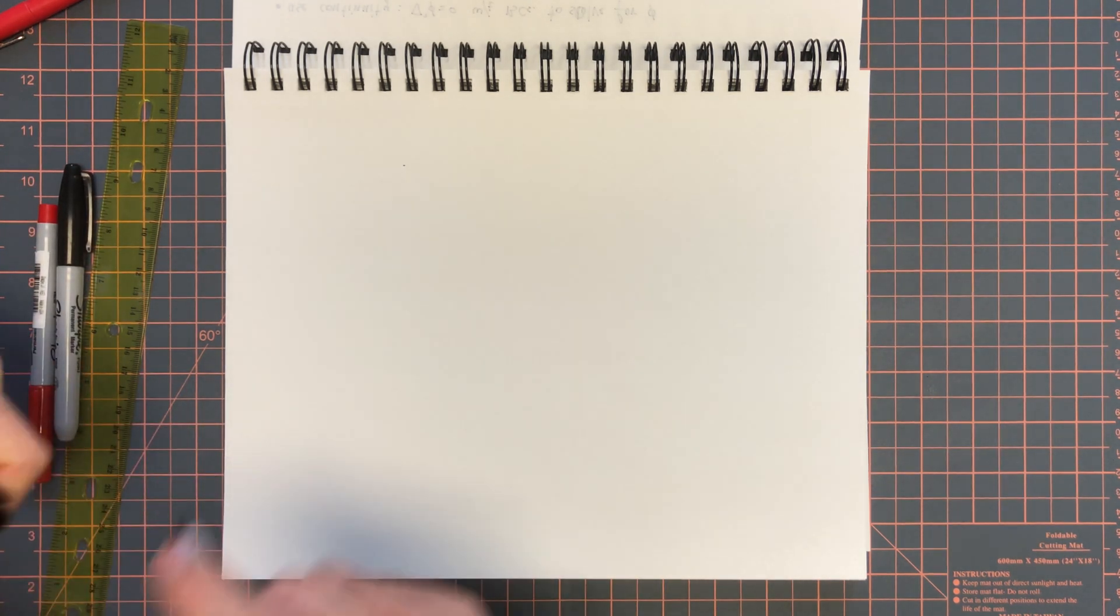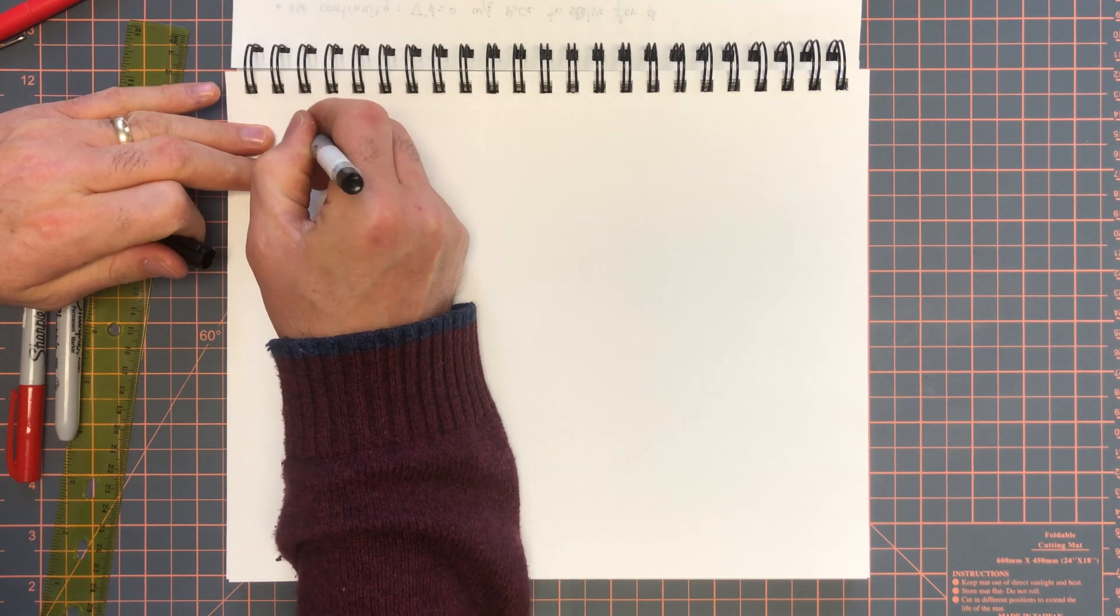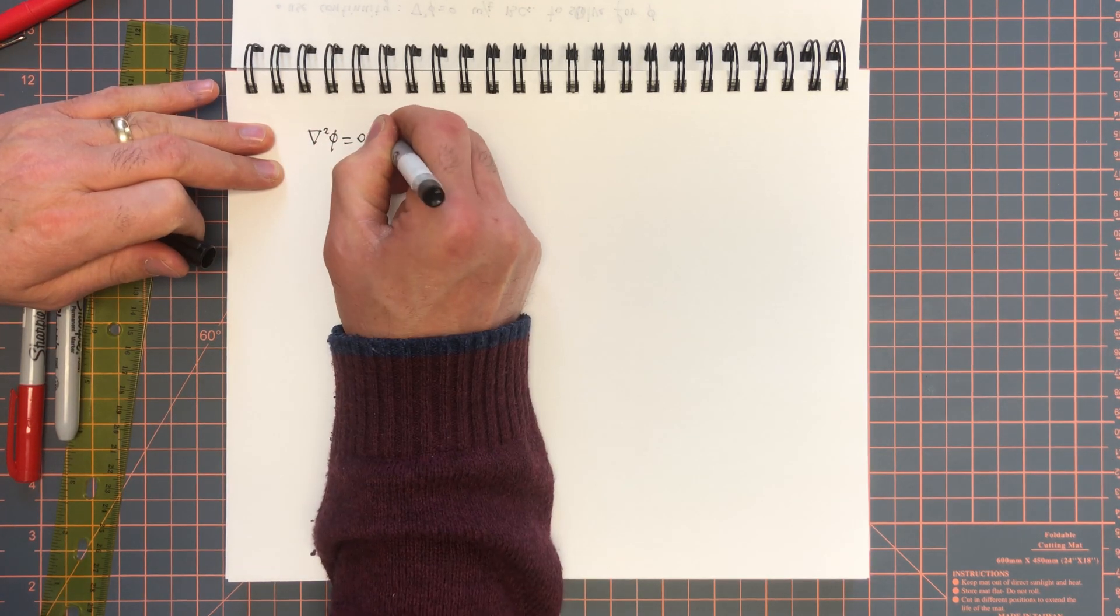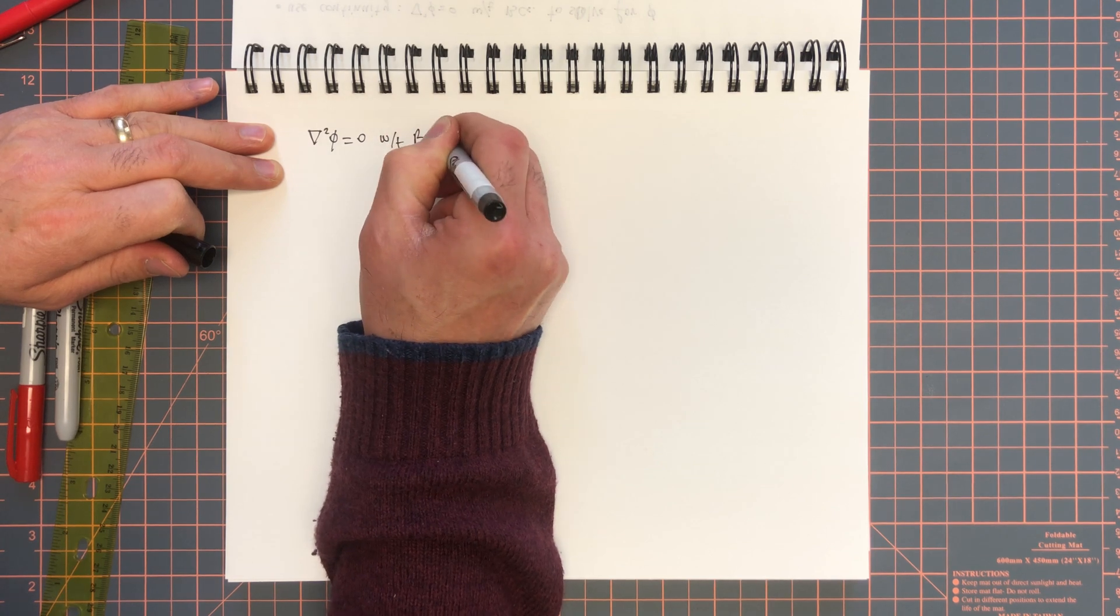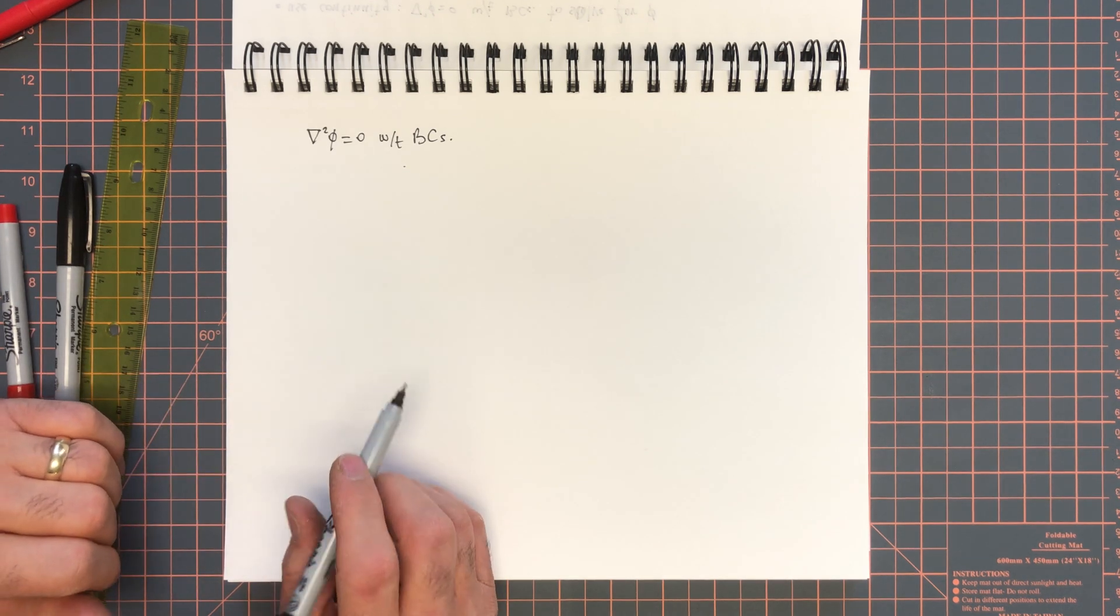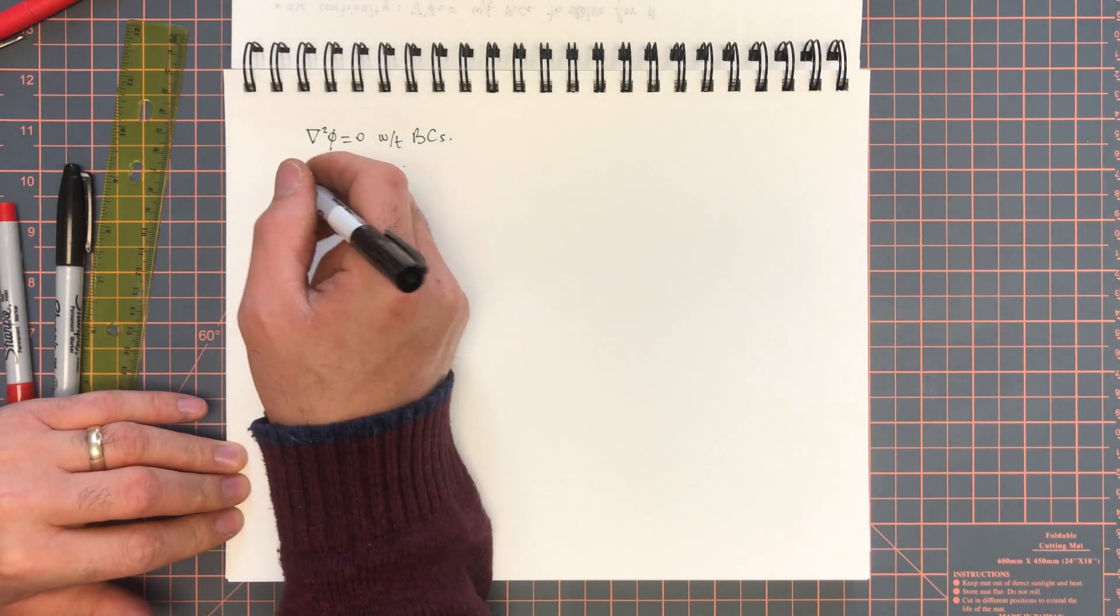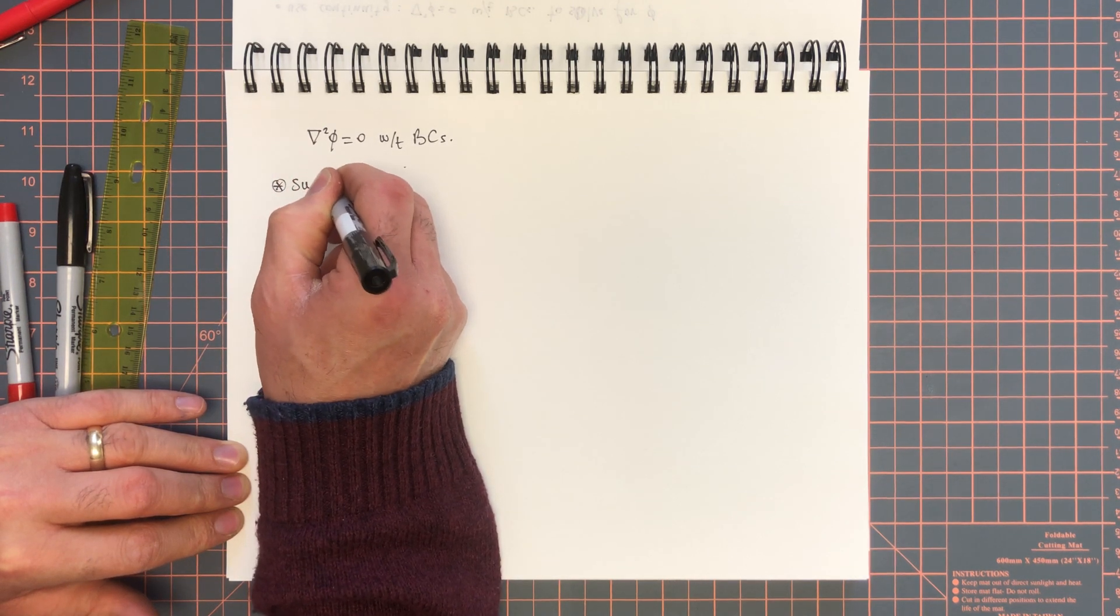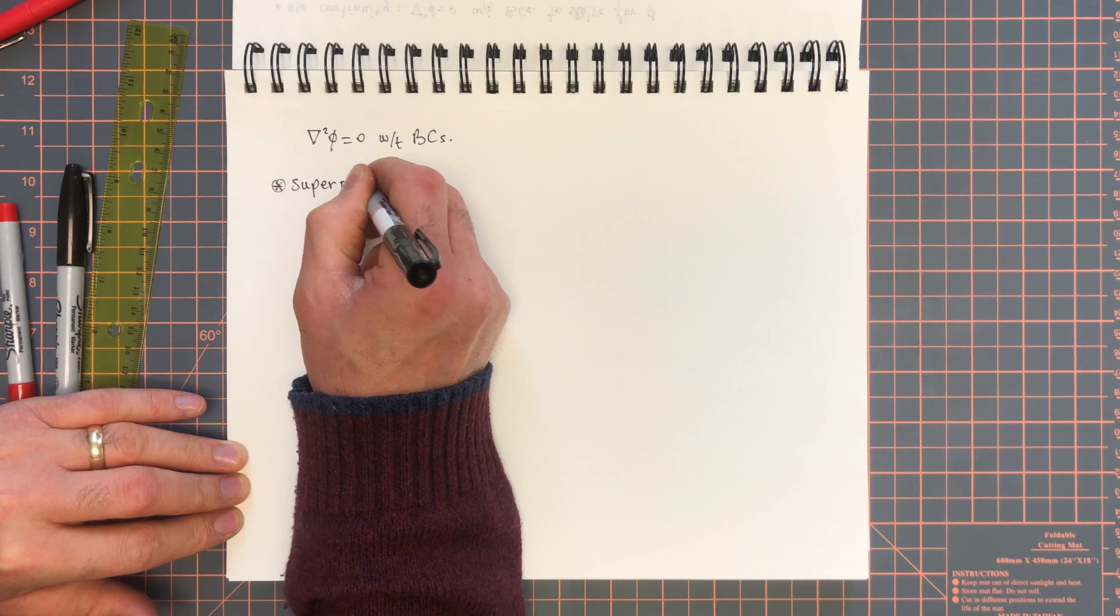Now, certainly, you can always solve for del squared phi equal to zero with boundary conditions. However, what we will be discussing in this class is a little bit simpler than that. And one of the first properties that will enable us to do this is superposition or linearity.